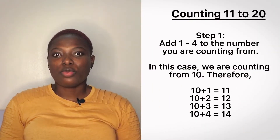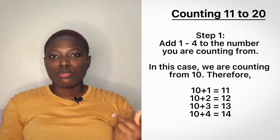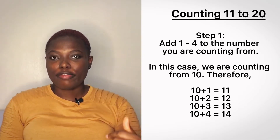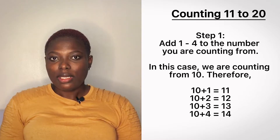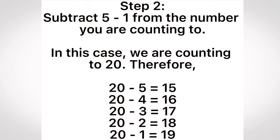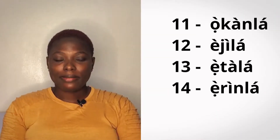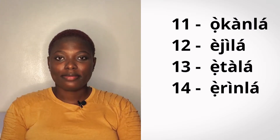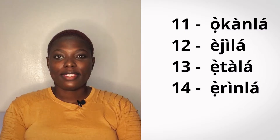When we're counting from 11, we add 1 to 10, 2 to 10, 3 to 10, 4 to 10. This is the basic thing you need to know about reading Yoruba numbers. Here's how to read 11 to 14: okonla, ejila, etala, erinla.